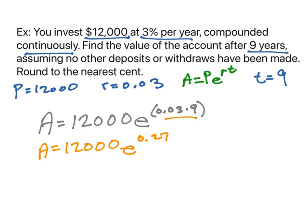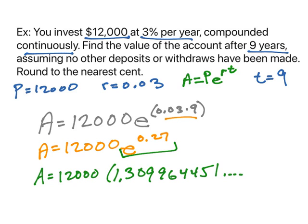Now, you can either type that all into your calculator at one time or you can do the exponents first. Just please do not round until the very end. So this is 1.309964451, goes on and on and on. If I multiply by 12,000 and round to the nearest penny, I get $15,719.57.